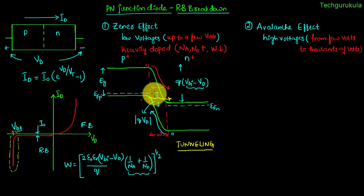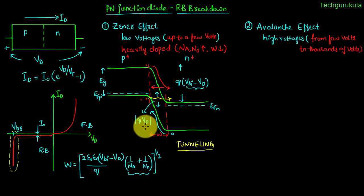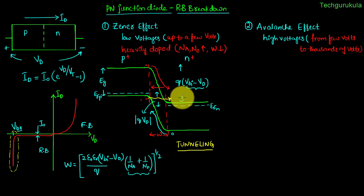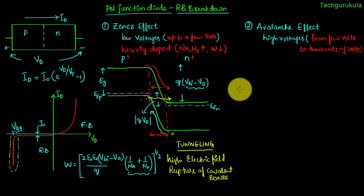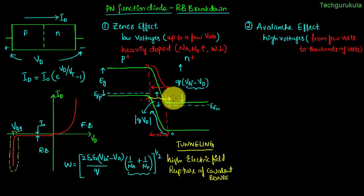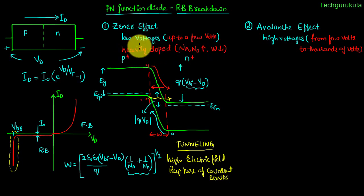The difference between E_FP and E_FN is q·|V_D|, and this difference is not very high for tunneling to happen, so for low voltages of just a few volts, this phenomenon can cause a flood of electrons to flow through the P-N junction even in reverse bias — resulting in a sudden increase of current in the IV characteristics. In a lightly doped P-N junction diode, the depletion width would be large, so electron tunneling would be negligible and Zener effect would not happen.